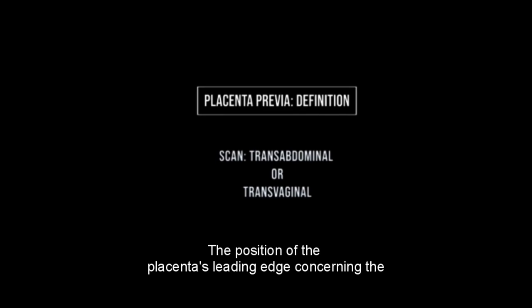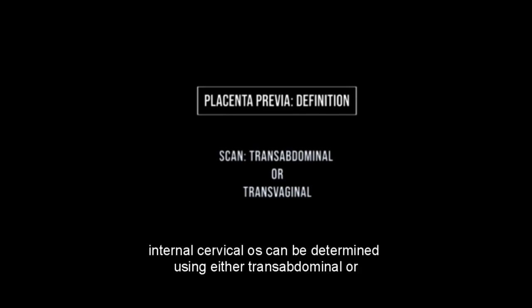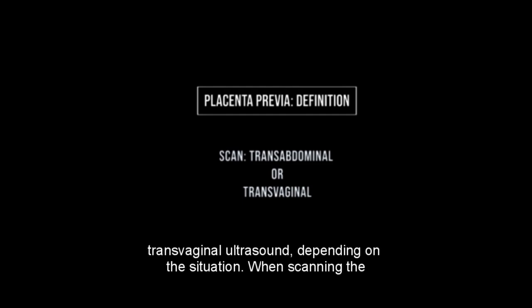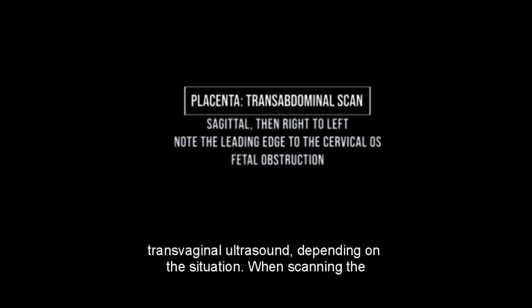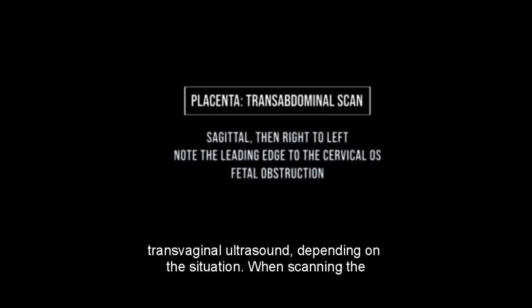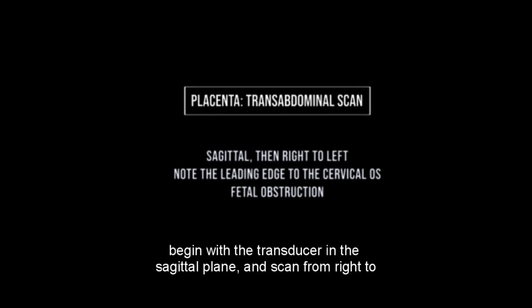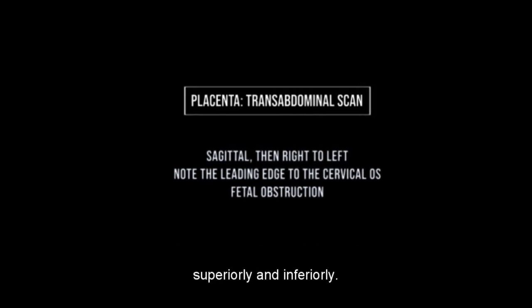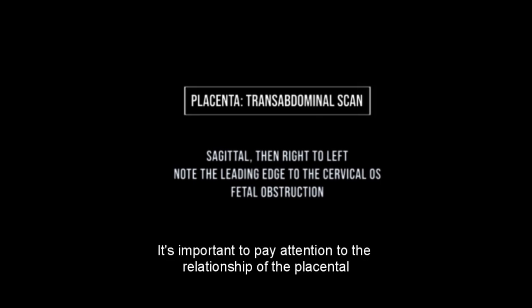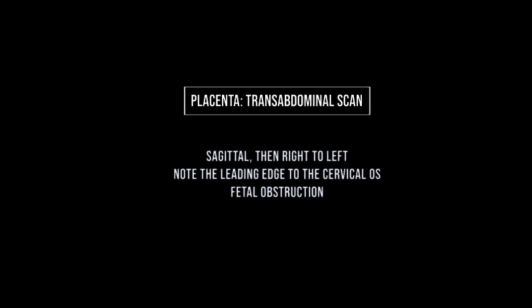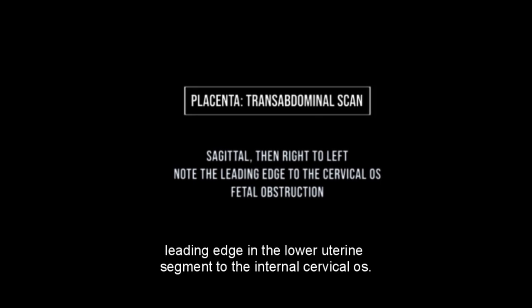The position of the placenta's leading edge concerning the internal cervical os can be determined using either transabdominal or transvaginal ultrasound, depending on the situation. When scanning the placenta transabdominally, begin with the transducer in the sagittal plane and scan from right to left, superiorly and inferiorly. It's important to pay attention to the relationship of the placental leading edge in the lower uterine segment to the internal cervical os.